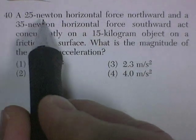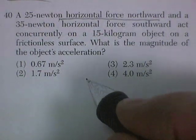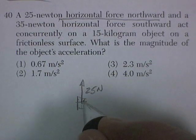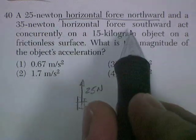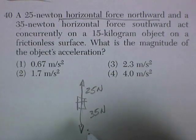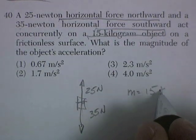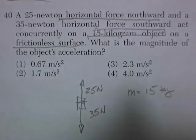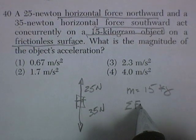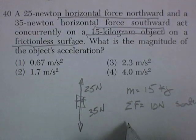And question 40. A 25 Newton horizontal force northward. Okay, so you're looking from above, and I've got 25 Newtons pulling it northwards. And a 35 Newton horizontal force southwards. Act concurrently, which means at the same time, on a 15 kilogram object. So the mass is 15 kilograms. And a frictionless surface. What is the magnitude of the object's acceleration? Well, the net force is going to be 25 north, 35 south, 10 Newtons south.